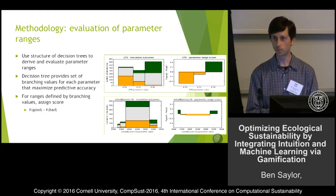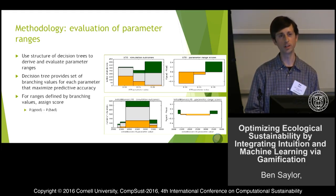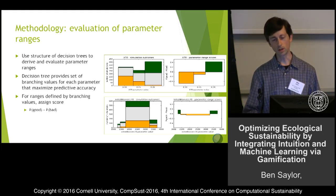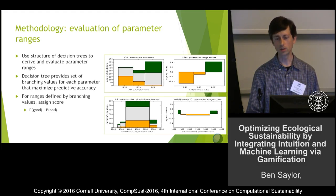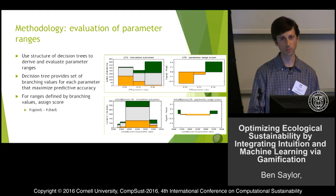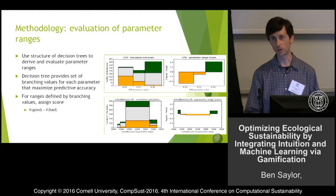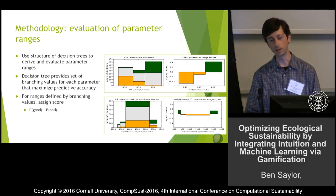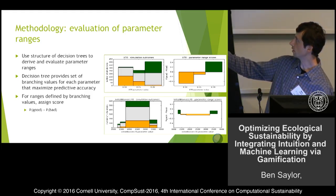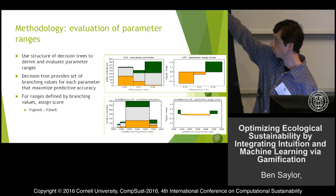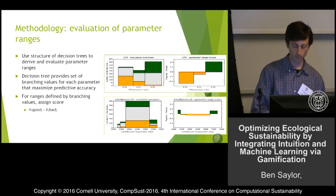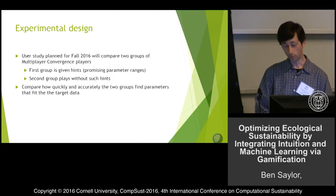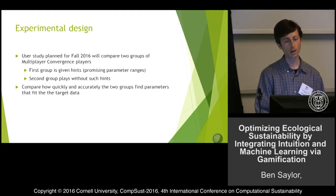A decision tree defines, among other things, a set of values on which the different input attributes can split observations to maximally separate one class from the other. This gives us a set of ranges within which we can count simulations and calculate a score based on the number of good simulations versus bad simulations within the range — essentially probability of a good simulation minus the probability of a bad simulation. On the right, you can see scores calculated for different ranges for two different parameters, and the green boxes are the promising parameter ranges that we would display to players.